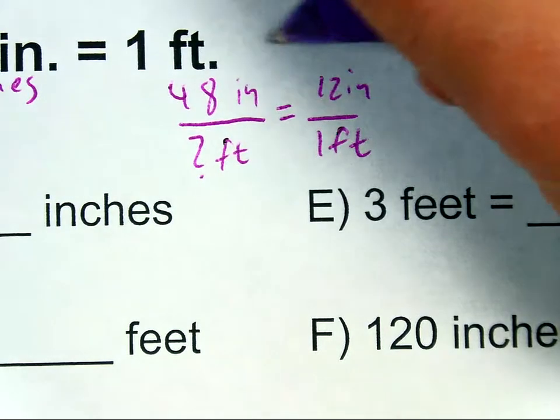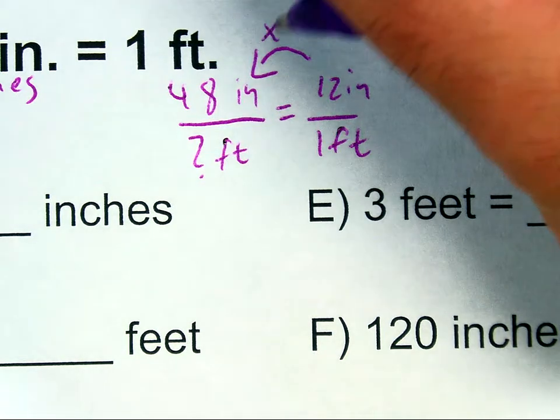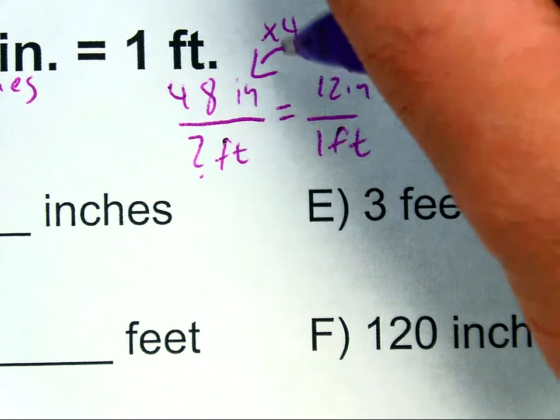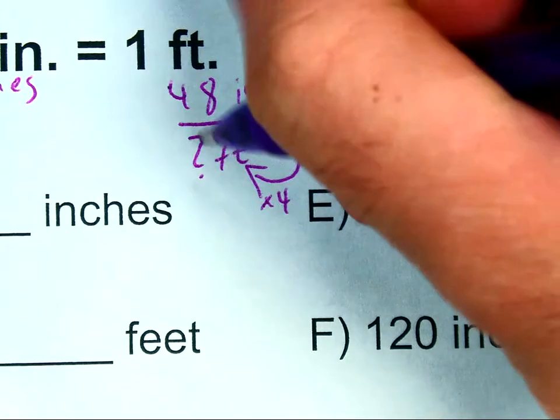So to get from 12 to 48, I multiply times some number. In this case, it's going to be 4. So whatever I do at the top after the bottom, 1 times 4 will be 4 feet.